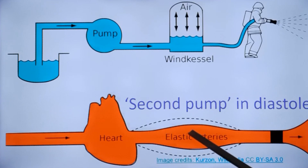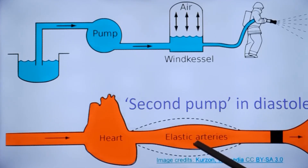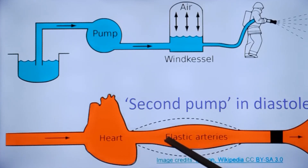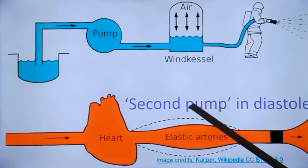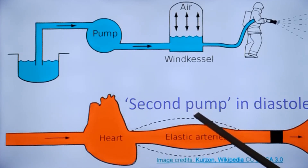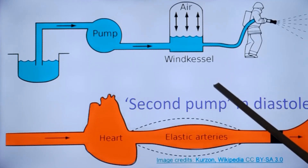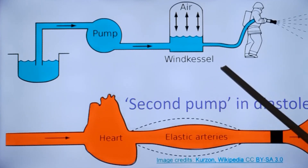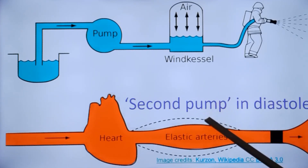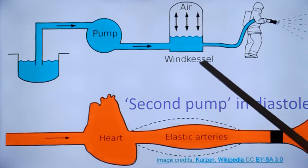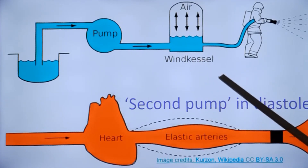When elastic arteries become less elastic — as occurs with aging and arteriosclerosis of the aorta — the second pump function, or the Windkessel effect of the aorta, decreases. This is the clinical importance of the Windkessel effect.